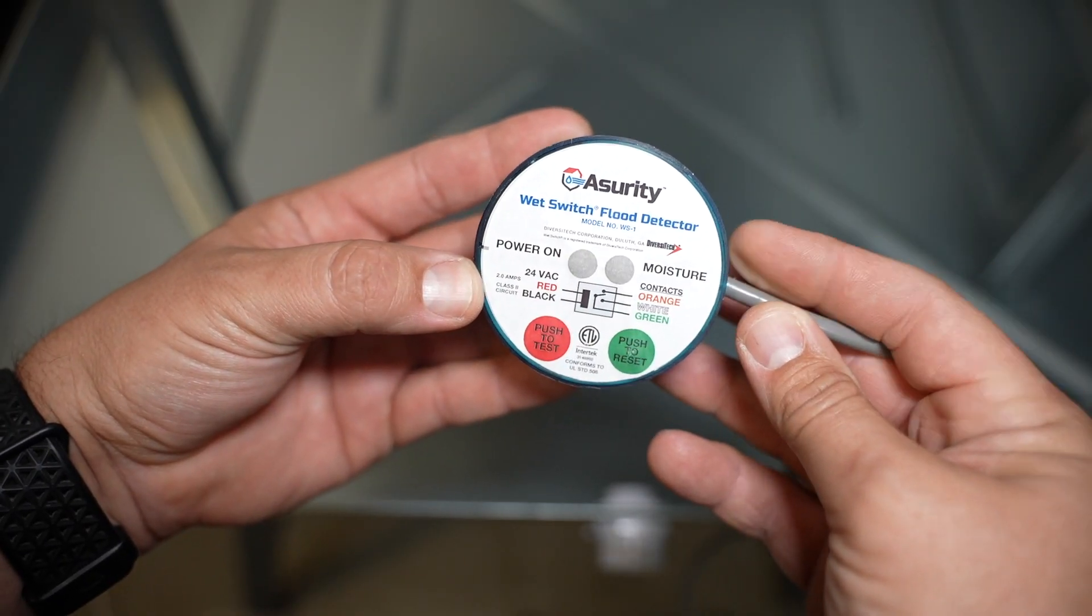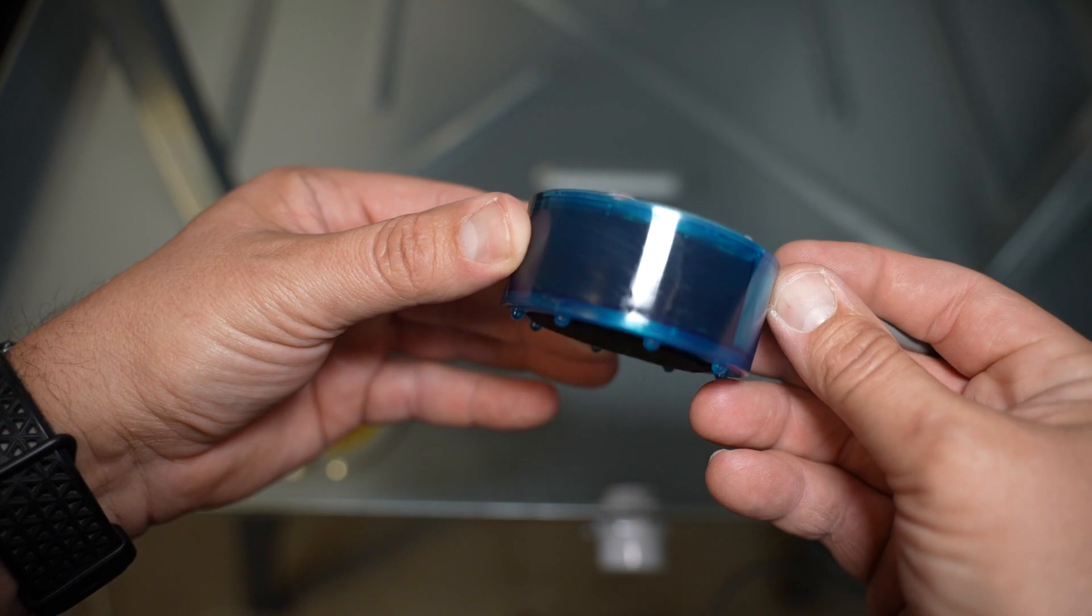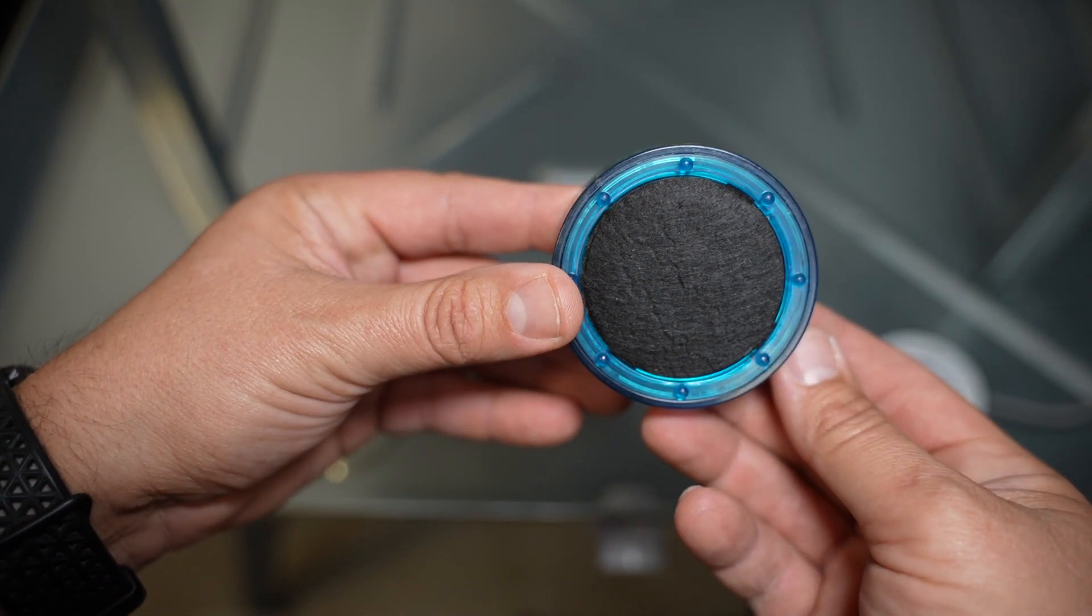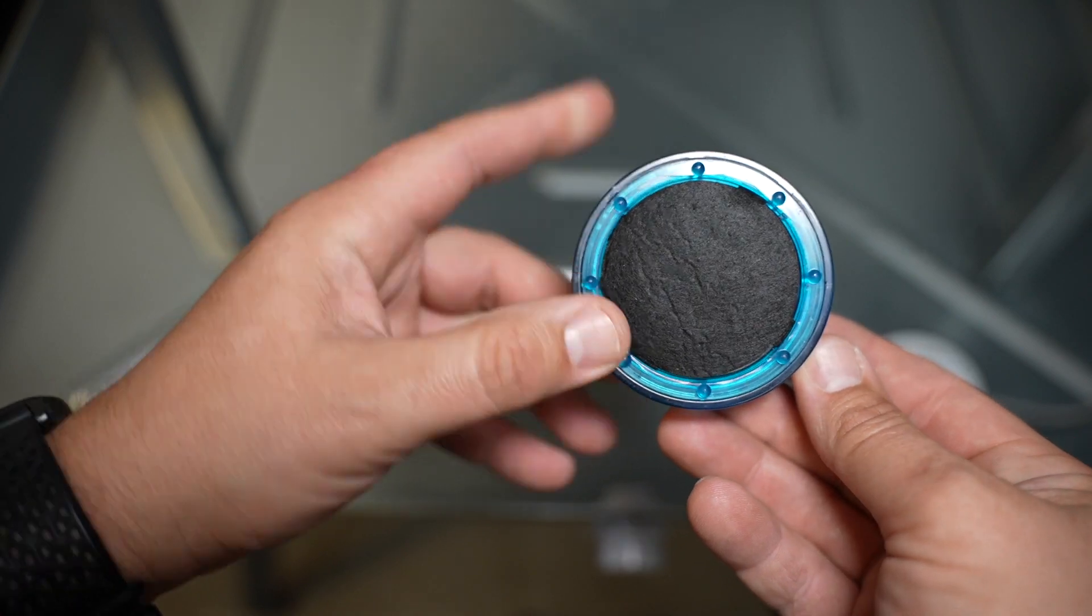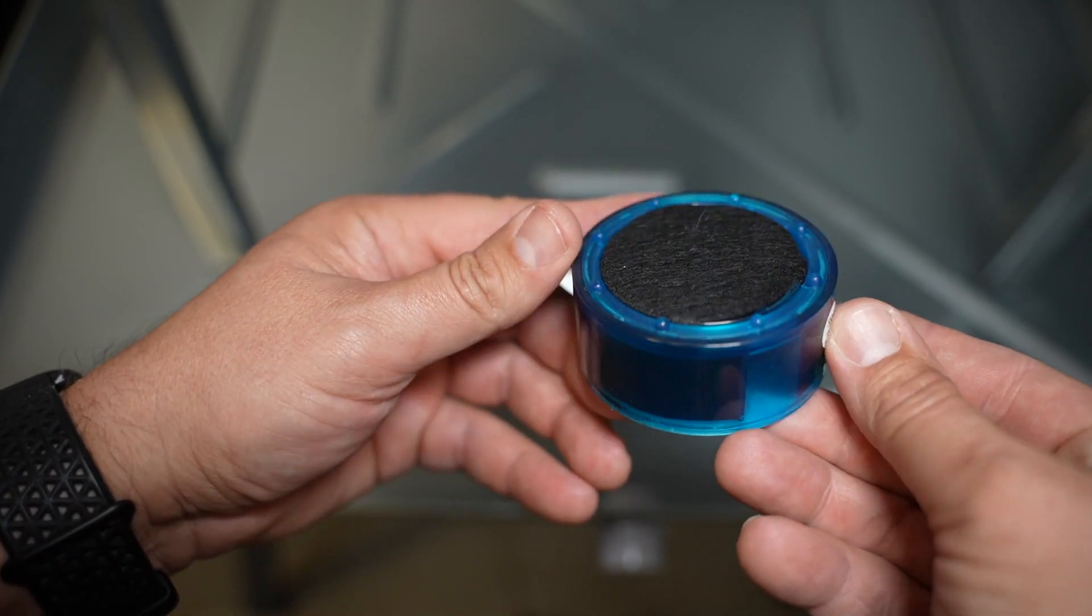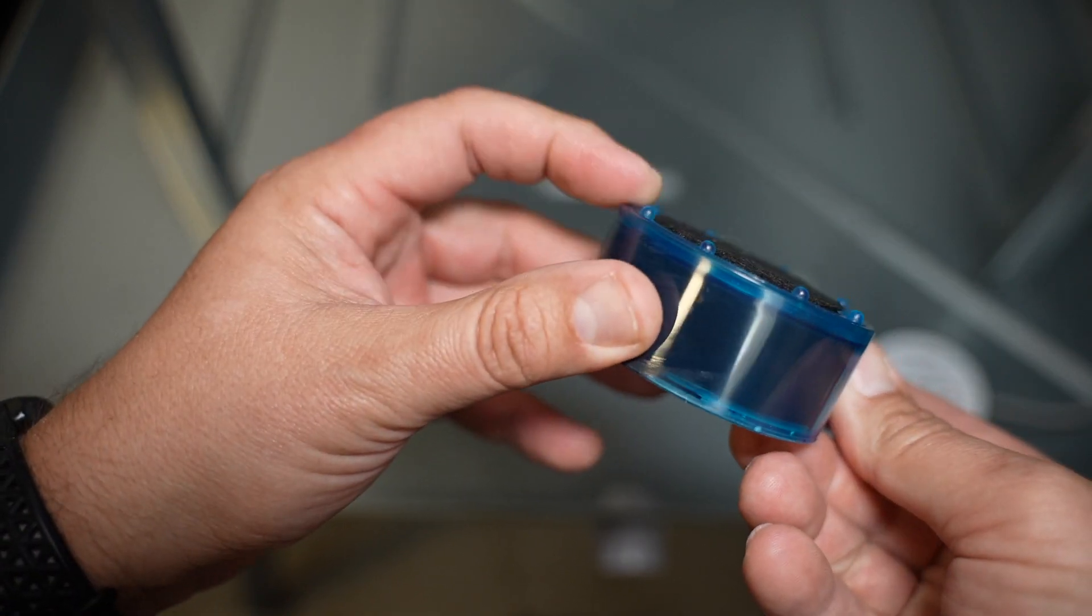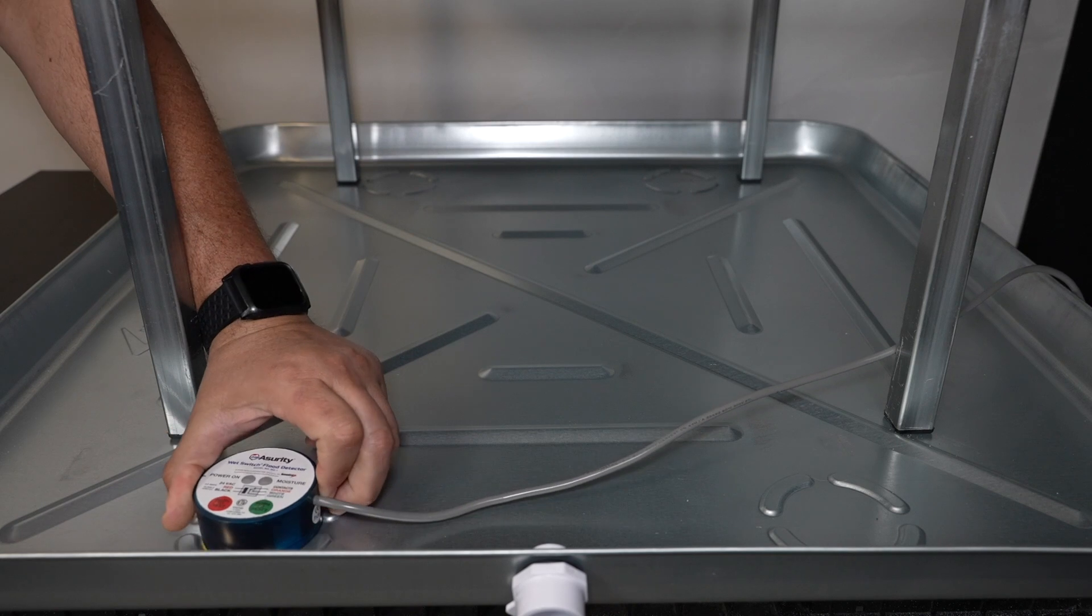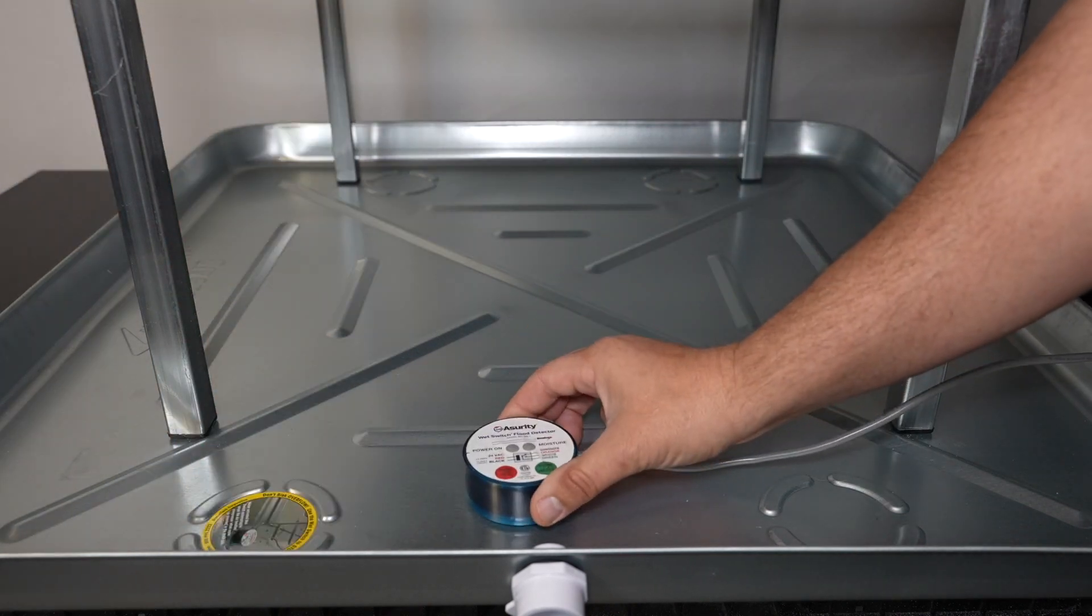When it comes to flood detection switches, the WS1 is the GOAT. Let's see why. The WS1 wet switch is a premium option for flood detection with solid state electronics and stainless steel sensors. The hydrophilic pad quickly draws water into the sensors, shutting equipment off with just a few drops of water. Its design makes it easy to install and allows for flexible placement options inside or outside of the pan.